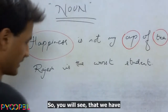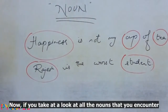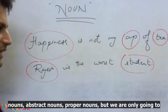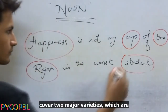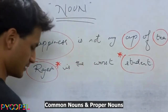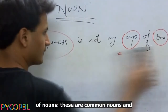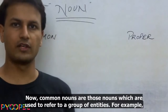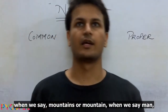If we take a look at all the nouns we encounter in daily life, there are a lot of varieties — abstract nouns, proper nouns, and so on. But we are only going to cover two major varieties: common nouns and proper nouns. Common nouns are those used to refer to a group of entities. For example, mountain, man, woman.